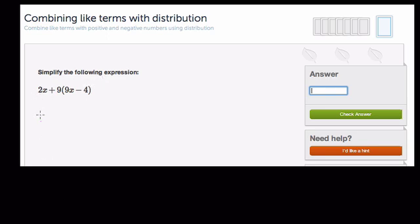Where it says 2x plus 9 times 9x minus 4. Now, remember, basic order of operations, where multiplication comes first.